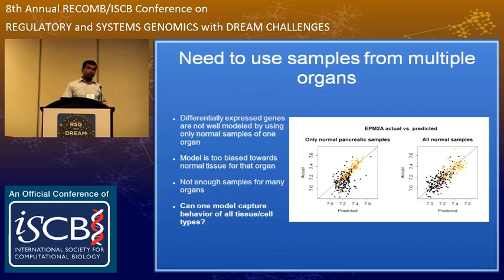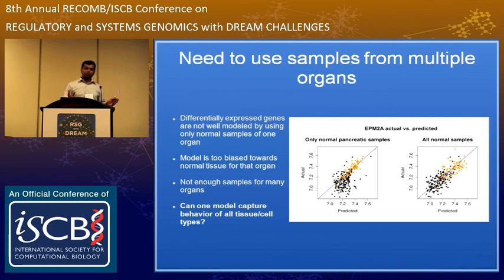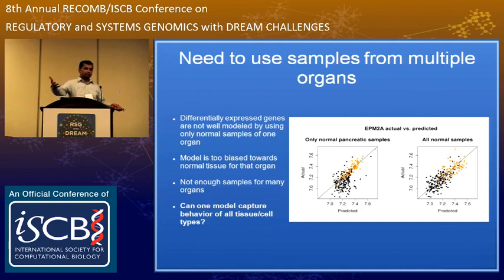The problem is I cannot use data from just one organ. If I'm interested in pancreatic cancer versus normal, I cannot just use pancreatic normal samples to create a network and try to fit pancreatic cancer samples — because the genes I'm most interested in, the ones with the biggest fold change between cancer and normal, are outside the range of the model. I'm trying to extrapolate outside the range of the model.